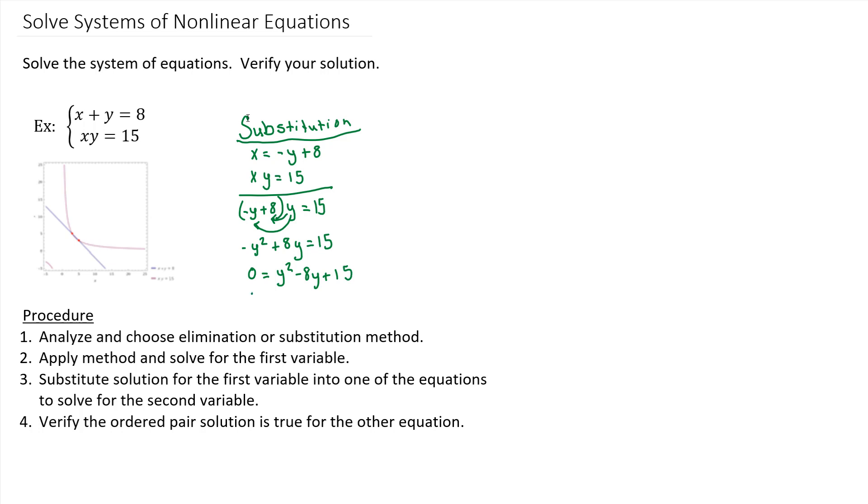This is a factorable quadratic, so we're going to focus on factoring it. We know Y times Y gives us Y squared. And then we have to think about what two numbers multiply together to give us 15, but add to give us negative 8. And the answer is negative 5 and negative 3.